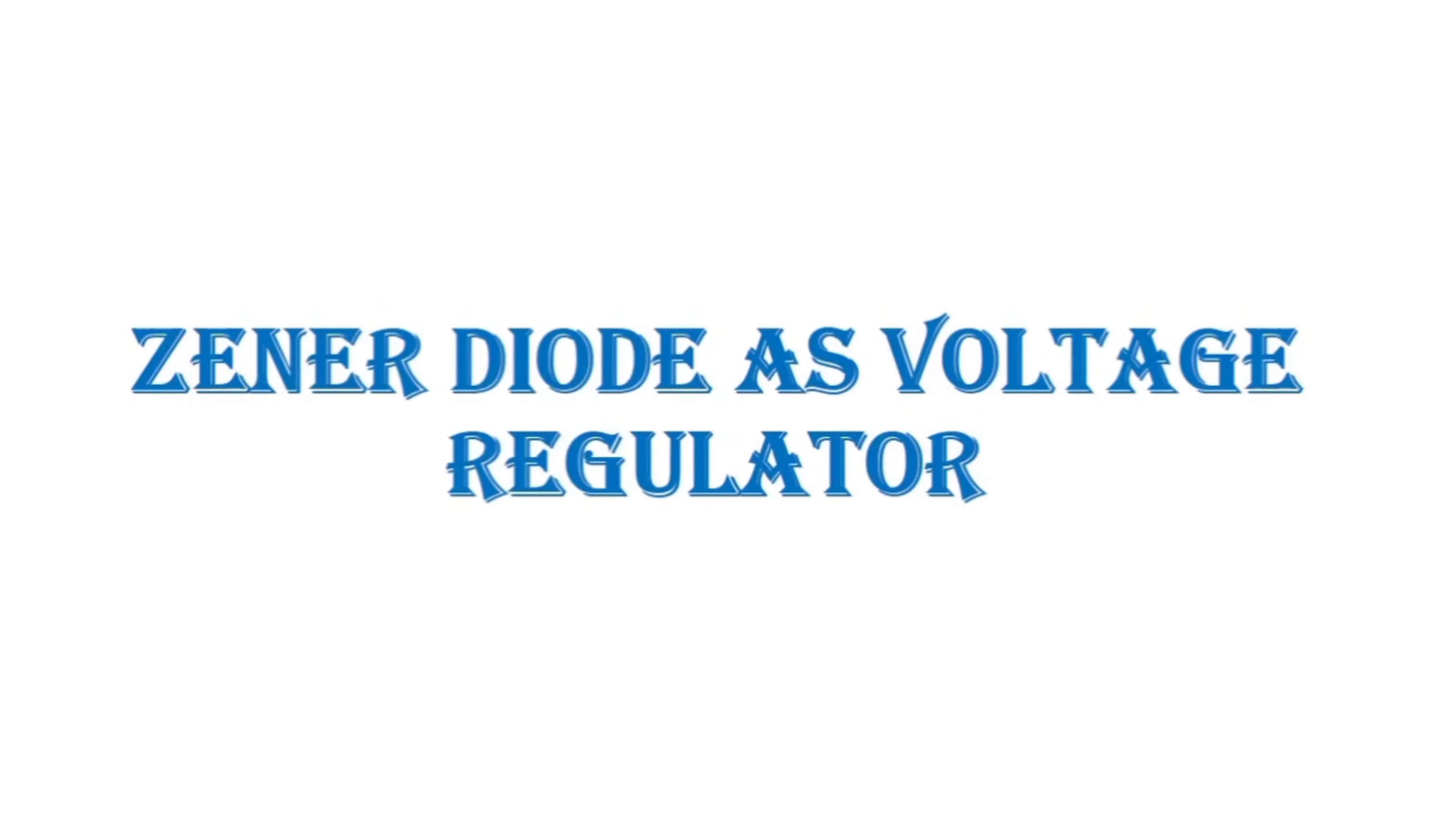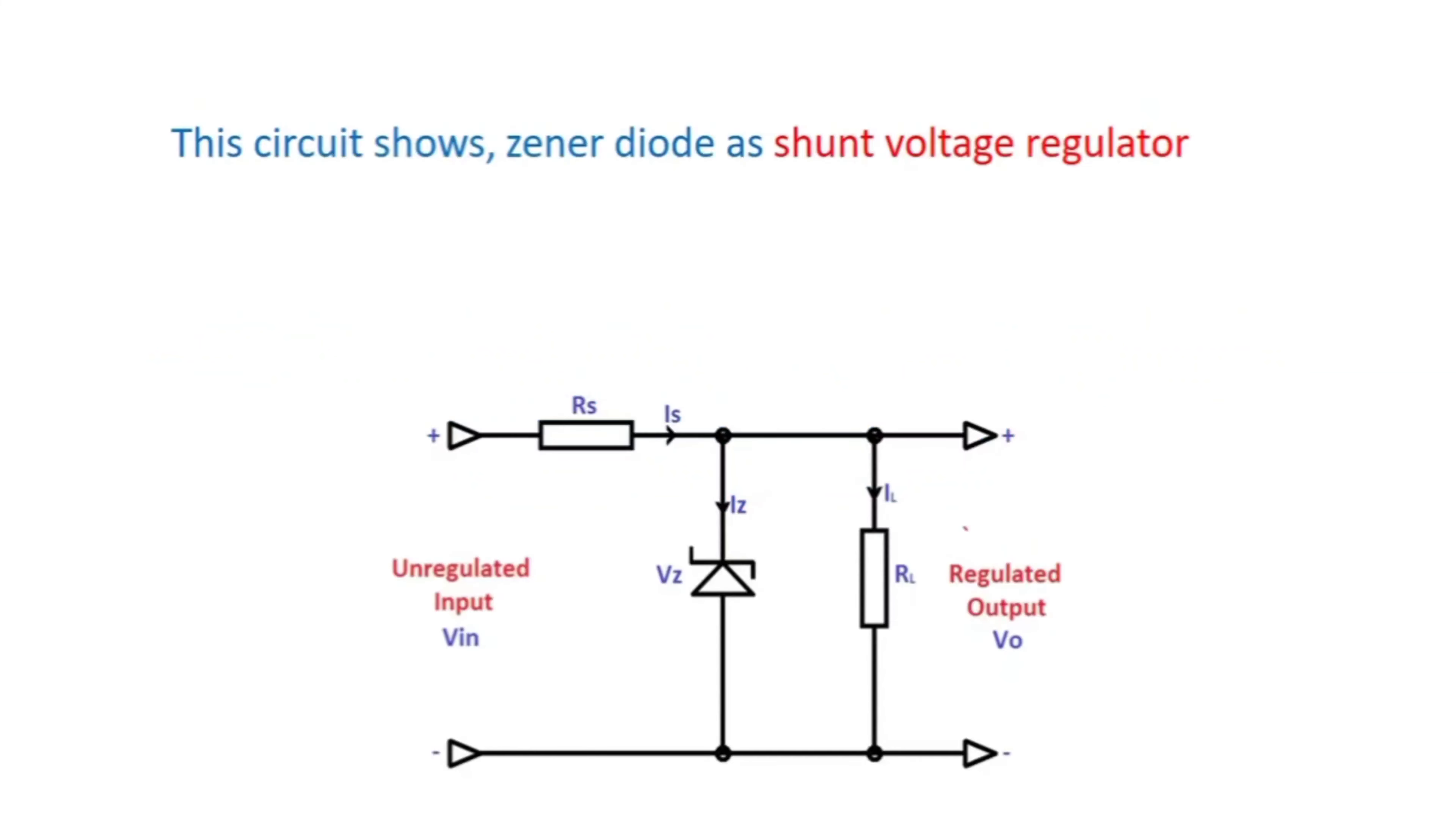Use of Zener diode as a voltage regulator. Let us go for that. Zener diode as voltage regulator. This is the circuit diagram. Zener diode acts as shunt voltage regulator.